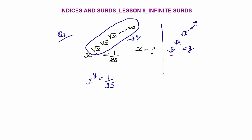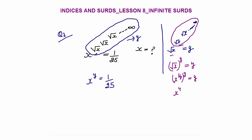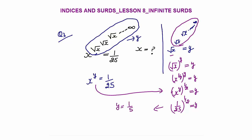We assumed y = √x^(√x^(√x...)) up to infinity. Looking at the inner circled part, this is also √x^(√x...) up to infinity, which equals y. So: (√x)^y = y, meaning x^(1/2 · y) = y, or x^(y/2) = y. Now x^y = 1/25, so x^(y/2) = (1/25)^(1/2) = 1/5. Therefore y = 1/5.